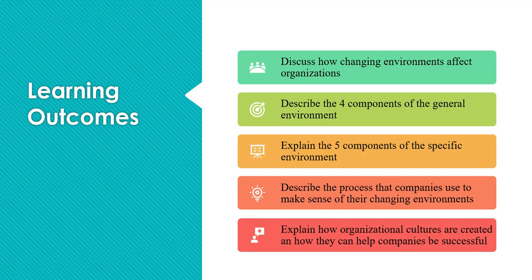The learning outcomes for this chapter, which you can find at the beginning of the chapter, are: to discuss how changing environments affect organizations, describe the four components of the general environment, explain the five components of the specific environment — and these two really go together. You'll see that later on, or if you've already read the chapter. Also, describe the process that companies use to make sense of their changing environments, and explain how organizational cultures are created and how they can help companies be successful.